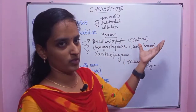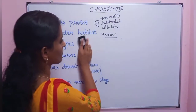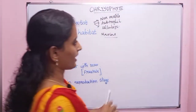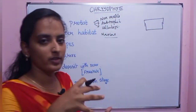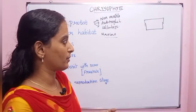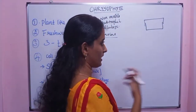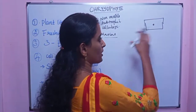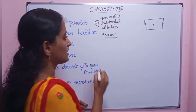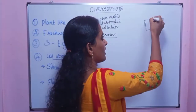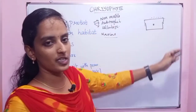Bacillariophyta are the diatoms. Now let's look at the diatom structure. The diatom cell structure is like a soapbox — one box fits inside another box. The cell wall is made up of silica deposition, and there is a mucilage secretion.